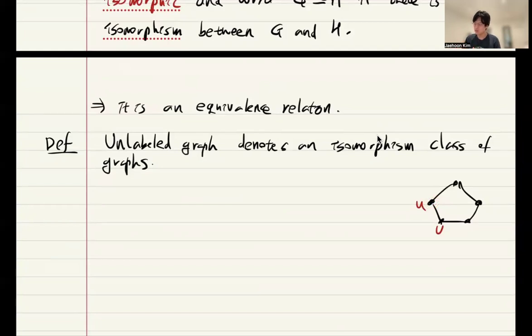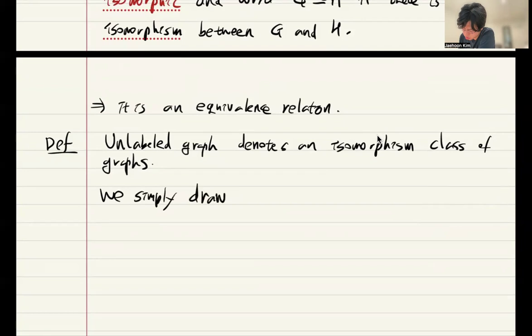It's not like this vertex innately has certain labels on it. It's just a vertex, but for our convenience, we name it as U and then we talk about this. So, this graph itself is unlabeled graph.